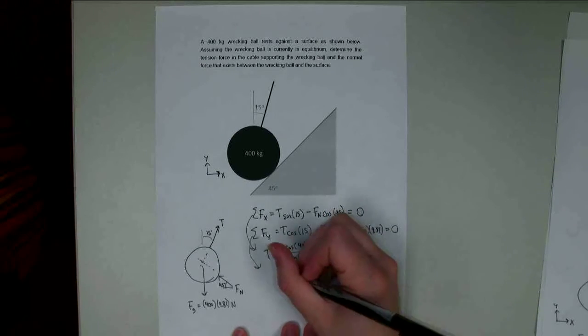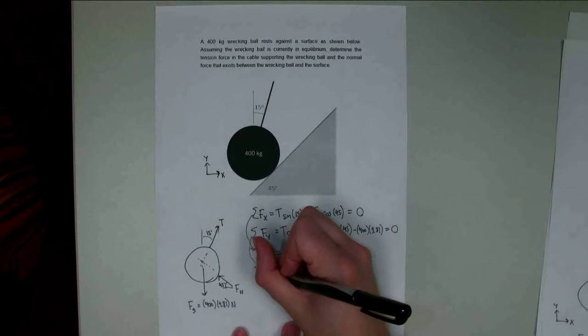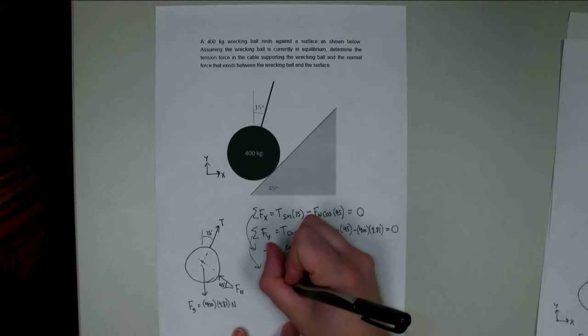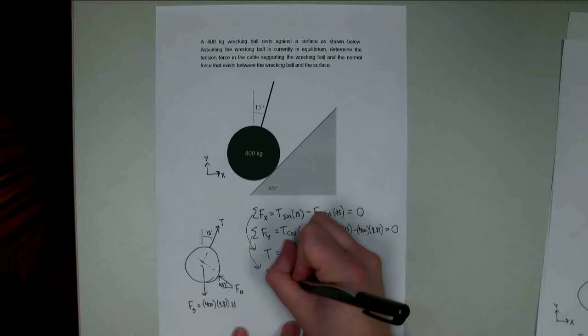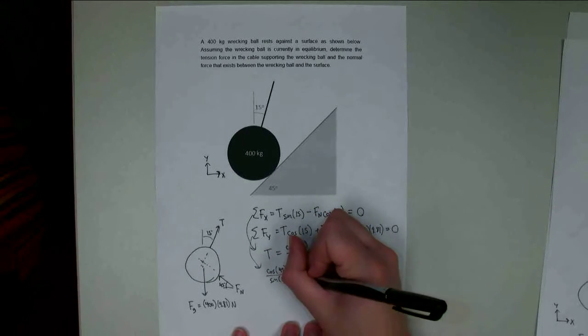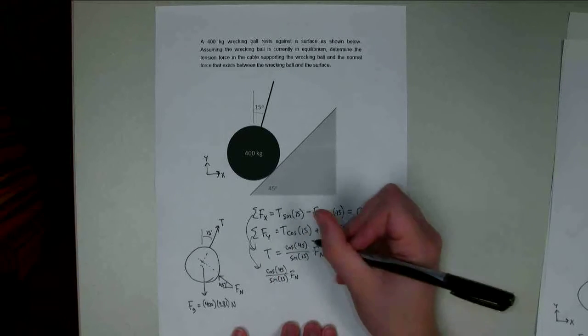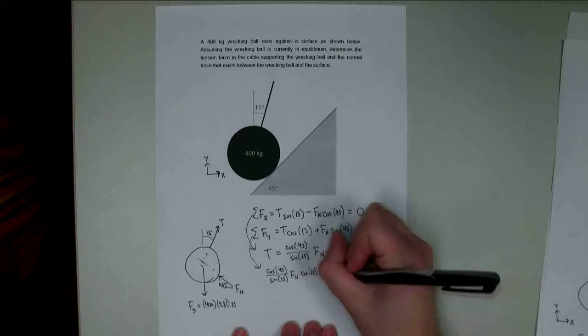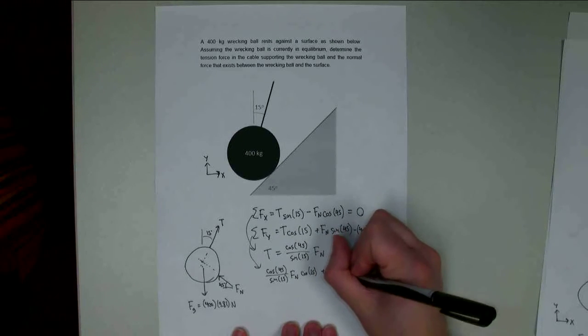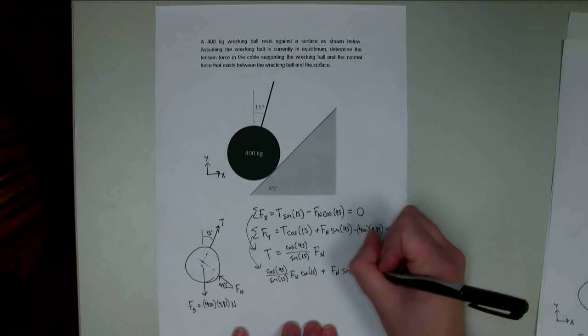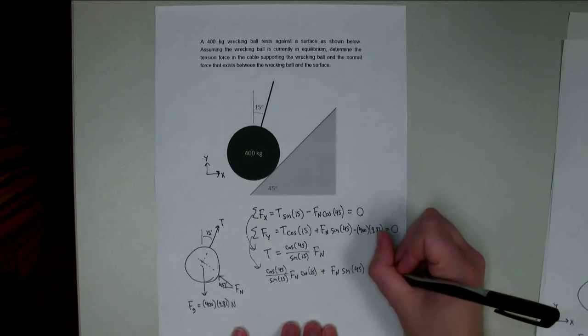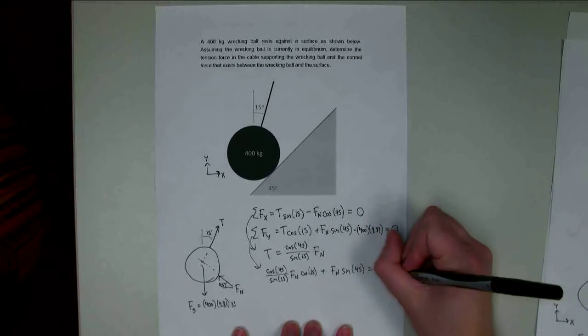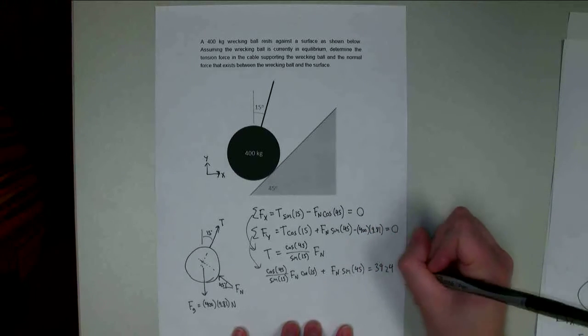I can substitute in this value for t right here. If I do cosine of 45 over sine 15 times Fn, and this whole thing gets multiplied by the cosine of 15, plus Fn sine 45 equals - if I do 400 times 9.81 - 3,924 newtons.